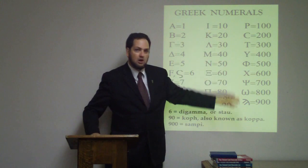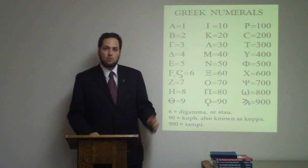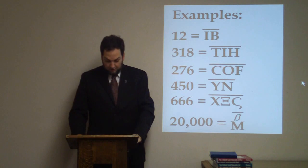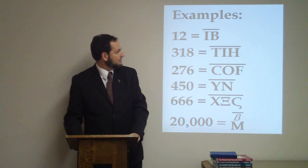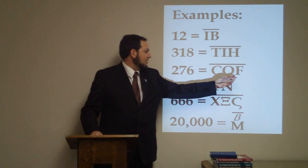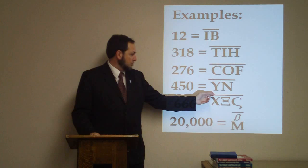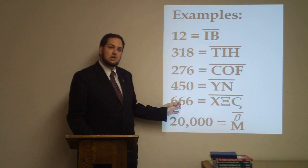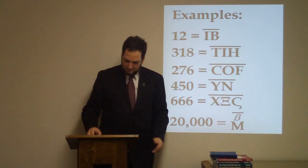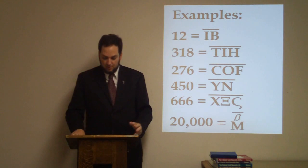Let's consider some examples of how this worked. The numeral 12 consists of iota alongside beta: 10 plus 2 is 12. 318 is written as 300 plus 10 plus 8. 276 is 200 plus 70 plus 6. For 450, only two letters are needed: upsilon is 400 and nu is 50. 666 is not three sixes; it's 600, and 60, and 6. Here we use the digamma, and here we use the stigma, but they're both six. Also, the letter mu could be used to represent ten thousand, that is, a myriad. The number of ten thousands was then placed above the mu.